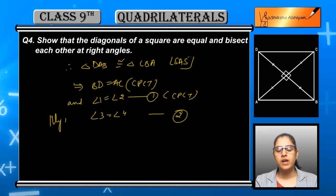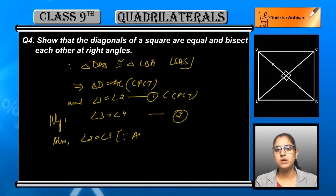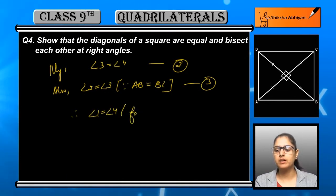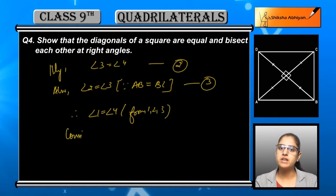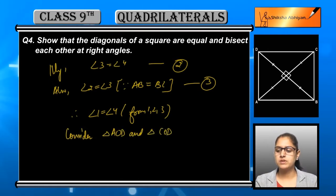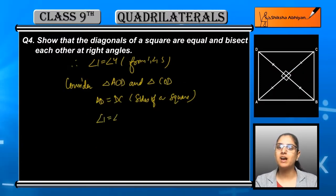Next, angle 1 is equal to angle 2, and angle 3 is equal to angle 4 — we can say they are also equal, giving us equations 1 and 2. Also, angle 2 is equal to angle 3, because AB is equal to BC, and you know that the two sides being equal means the opposite angles are equal.